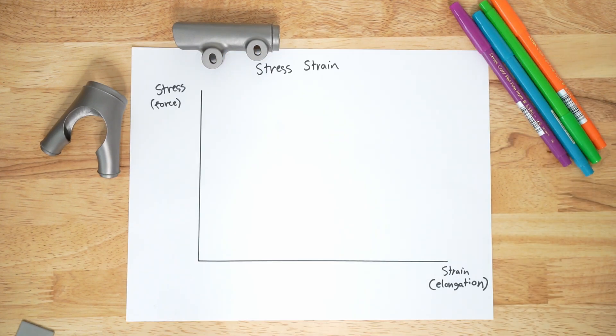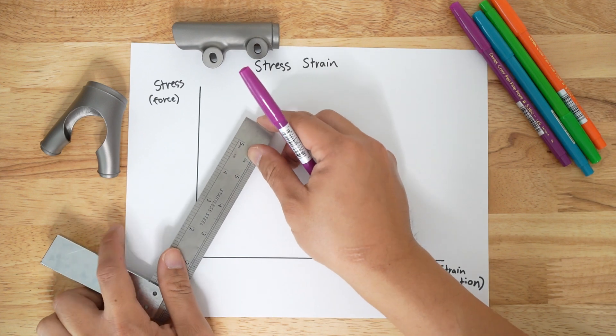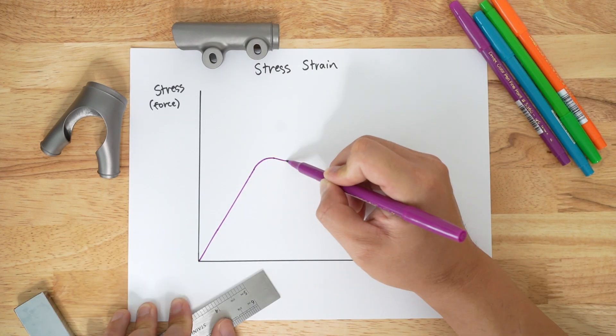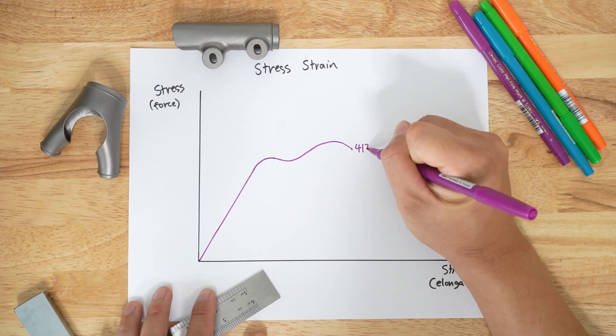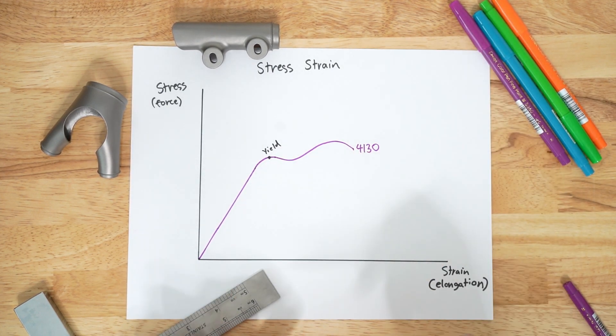Now that we understand the stress-strain curve, let's use it to understand the differences between frame materials. Let's start with 4130 chromoly steel as a baseline. It is pretty stiff, has decent yield strength, and a large plastic deformation region.